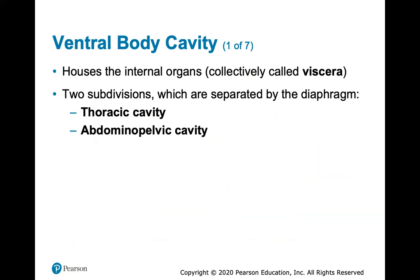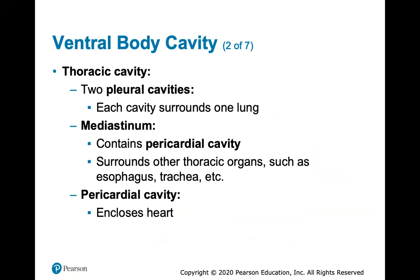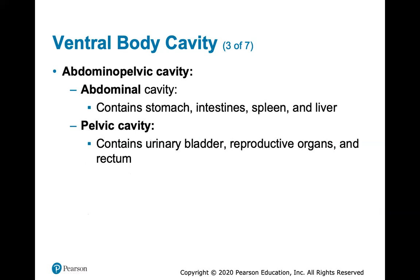The ventral body cavity houses internal organs called viscera, subdivided into thoracic and abdominal pelvic cavities, separated by the diaphragm muscle that helps you breathe. The word pleural has to do with lungs, so when you hear pleura, think lung. The mediastinum is the central cavity between the two pleural cavities and contains the pericardial cavity with the heart, as well as other thoracic organs like the esophagus and trachea. The abdominal pelvic cavity is further divided into abdominal and pelvic portions.